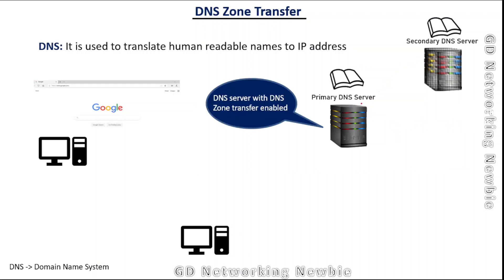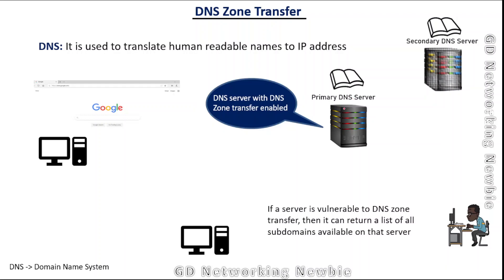For this to work, zone transfer must be enabled on the primary DNS server. But if that feature is enabled, any user can send the same request to get a copy of the DNS record from the primary server. So if this feature is enabled, we can say the server is vulnerable to DNS zone transfer. Any user requesting that record can receive a complete list of all records — including all subdomains available on that server, such as all subdomains of example.com.